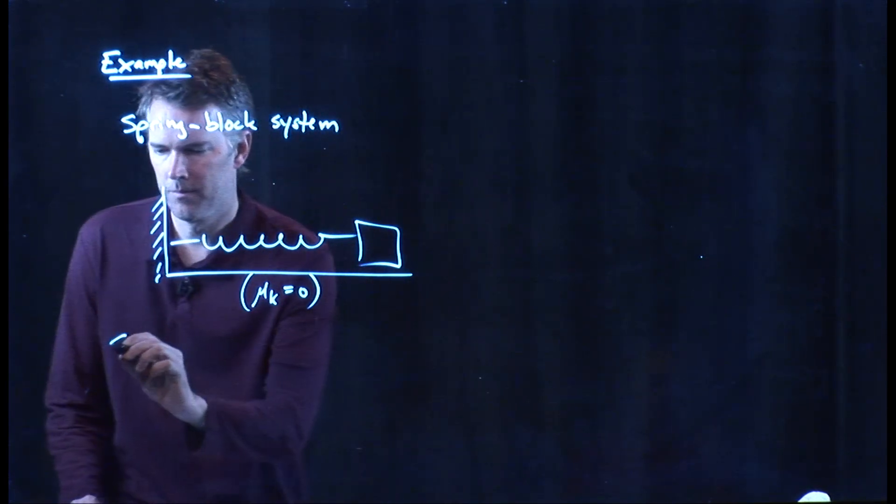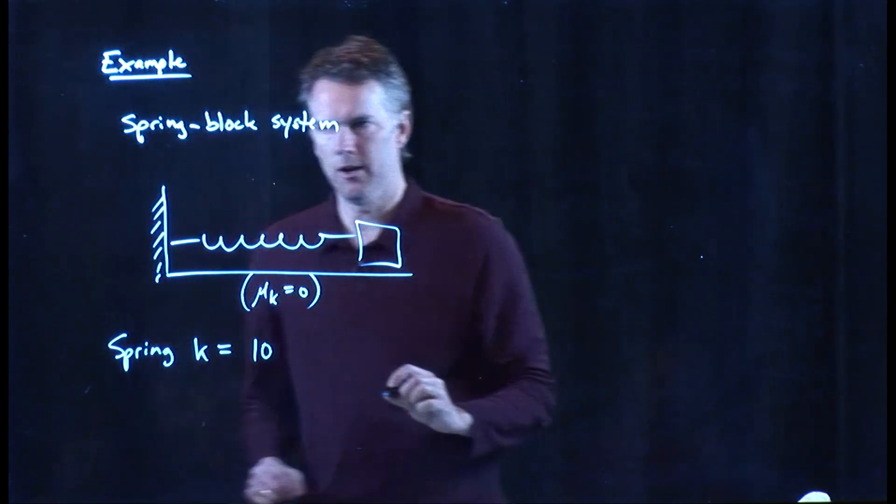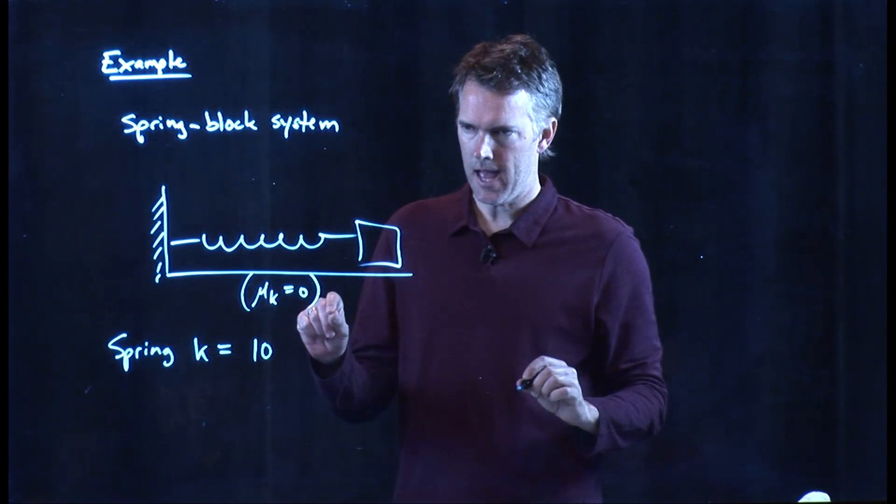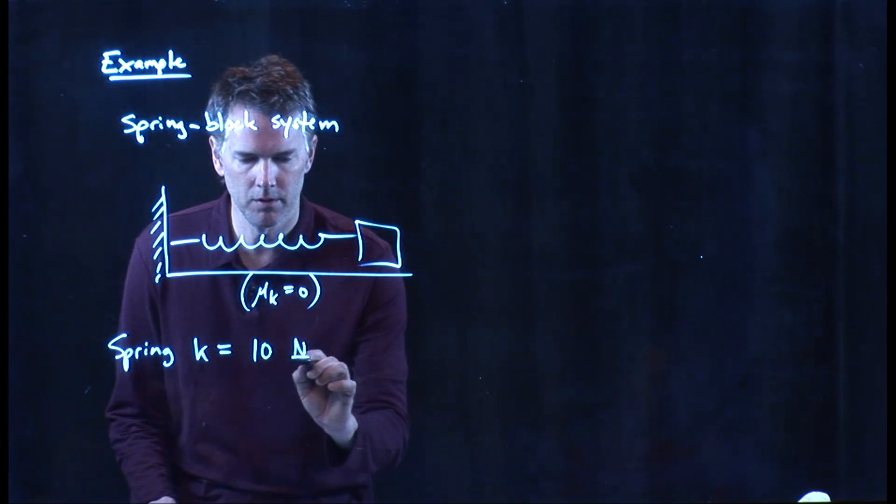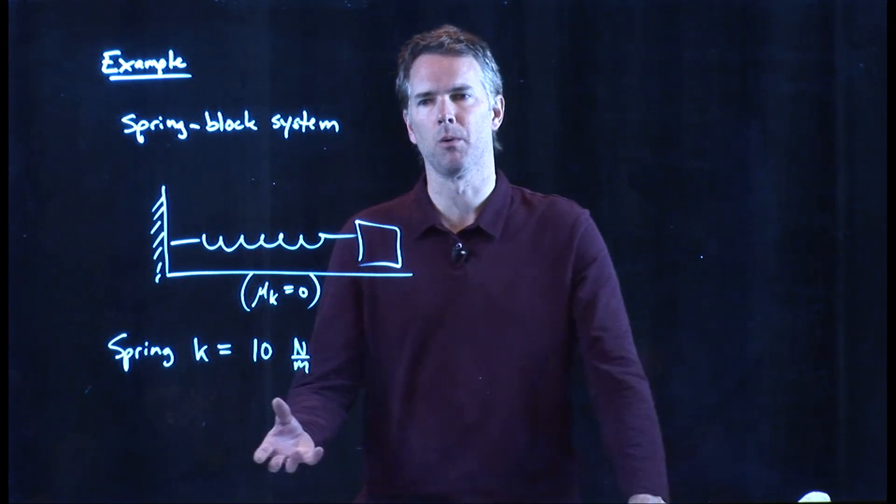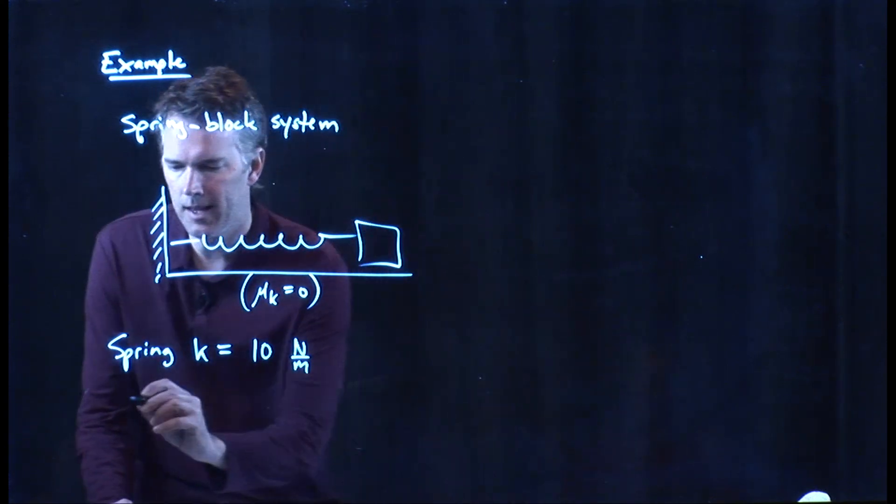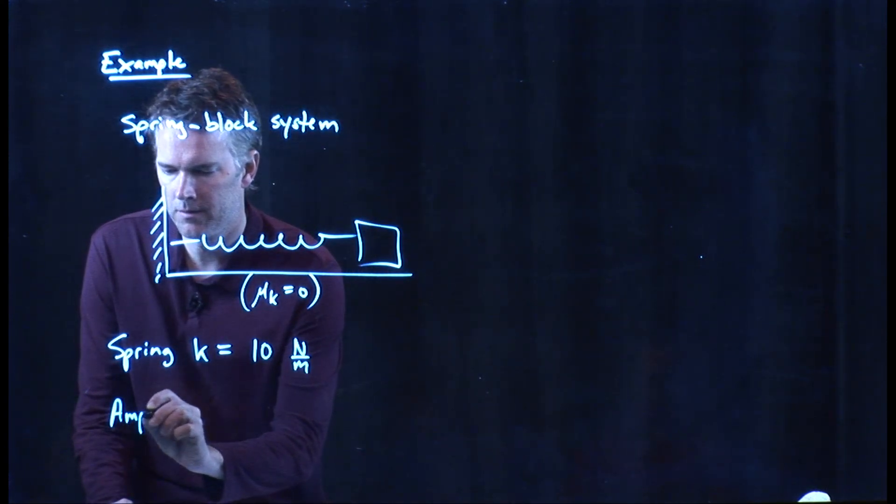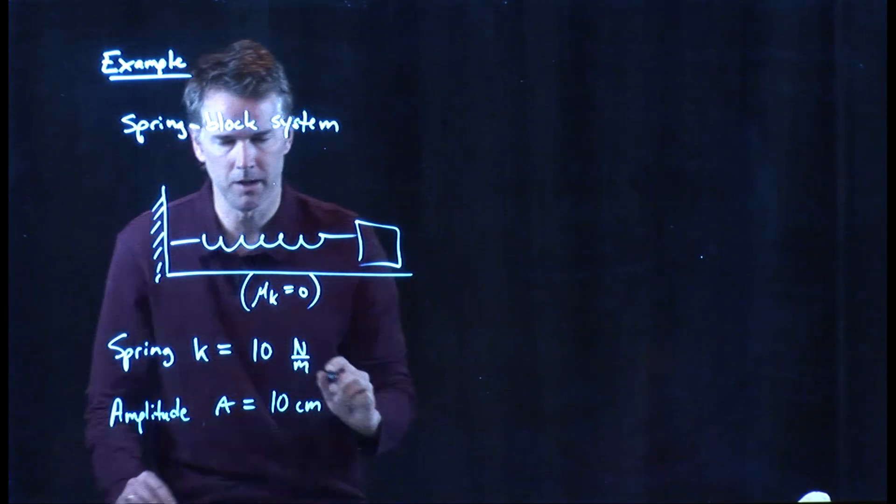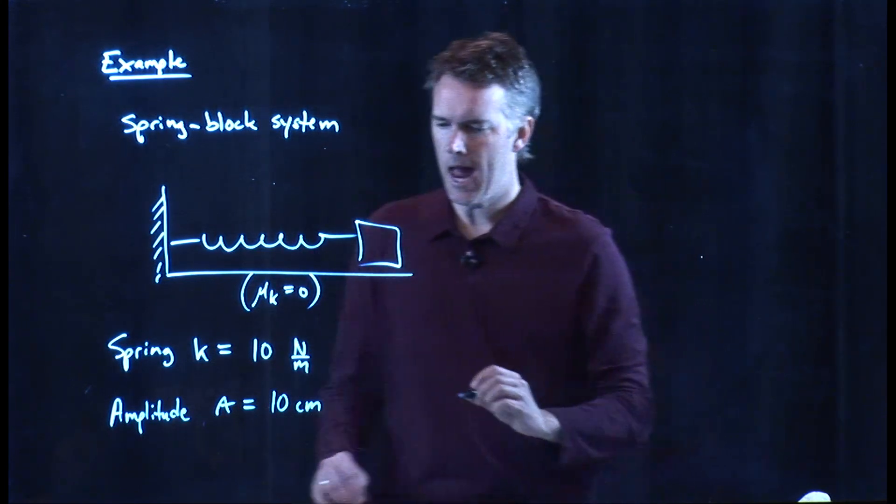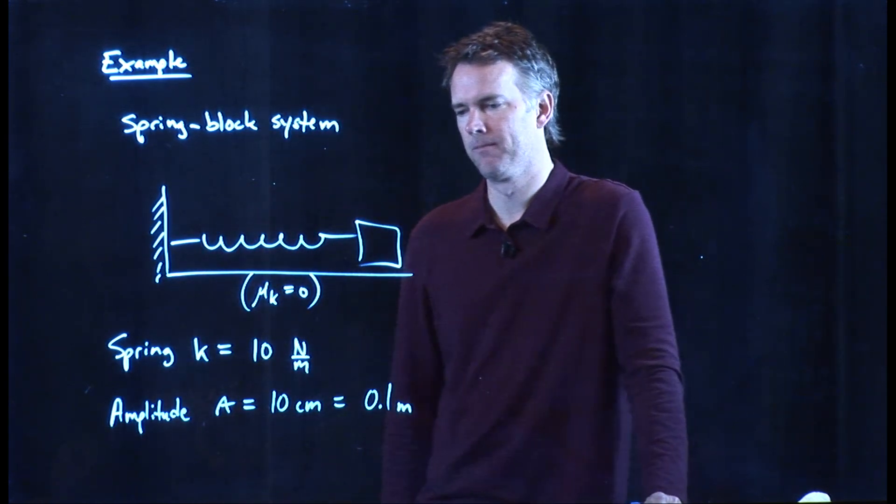And we're going to let the spring have the following value. It has units of 10. And in SI units, what are the units for a spring? Well, it is newtons per meter. You know that because when we multiply by meters, distance, we have to get back to newtons. And let's stretch it out to 10 centimeters. And then we're going to let it go. And 10 centimeters in SI units is, of course, 0.1 meters.